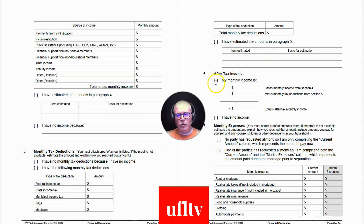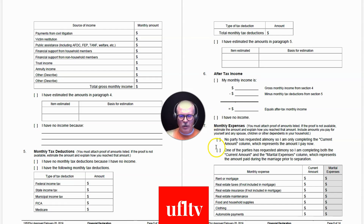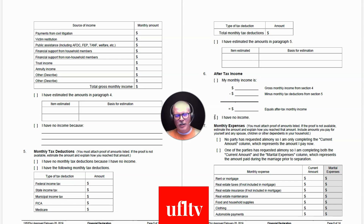Paragraph 6 is your monthly after-tax income. Take your gross monthly income from paragraph 4, subtract your tax deductions from paragraph 5, and the result is your after-tax net income, which you enter here. If you have no income, check the box. You'll notice there appear to be two 'no income' boxes — one on page 5 and one here — which may be an editorial oversight, but make sure you check both if applicable so nobody questions whether you overlooked it.